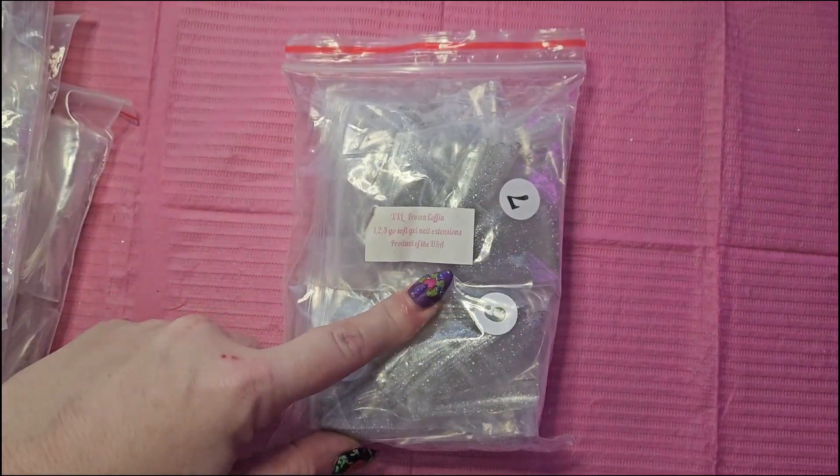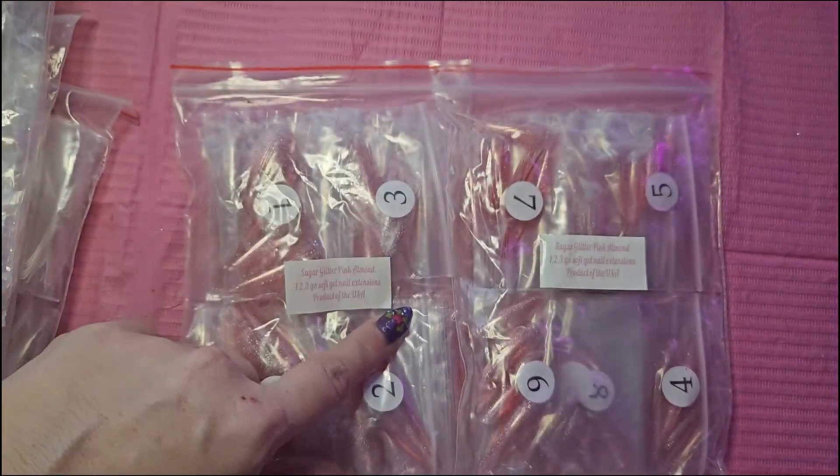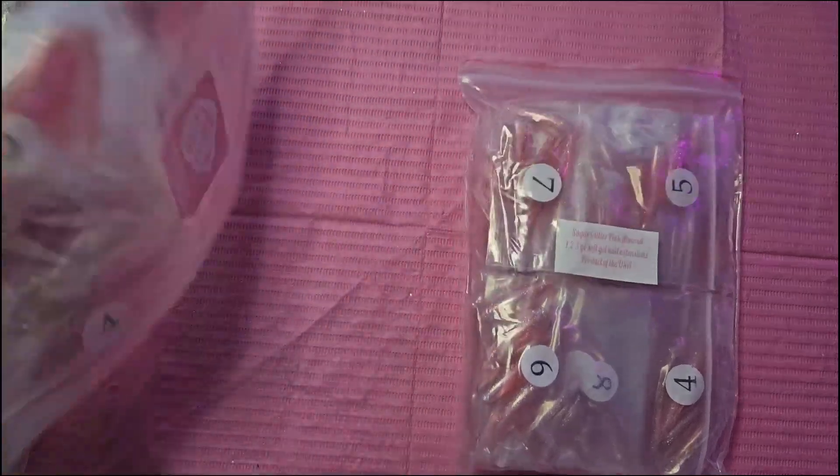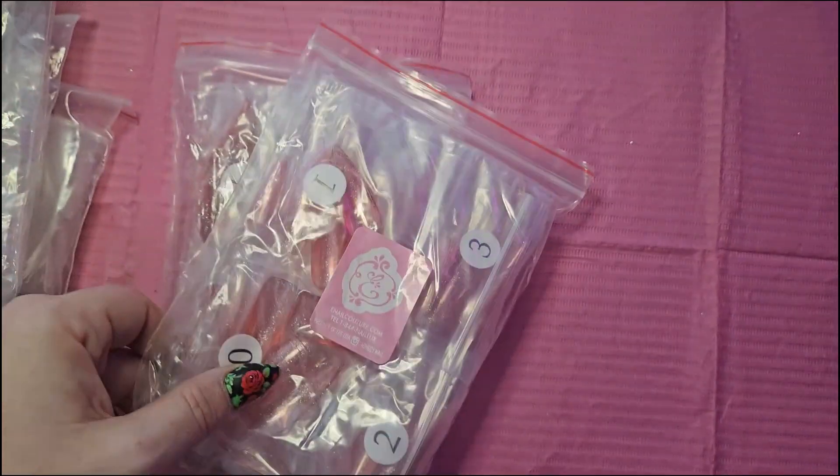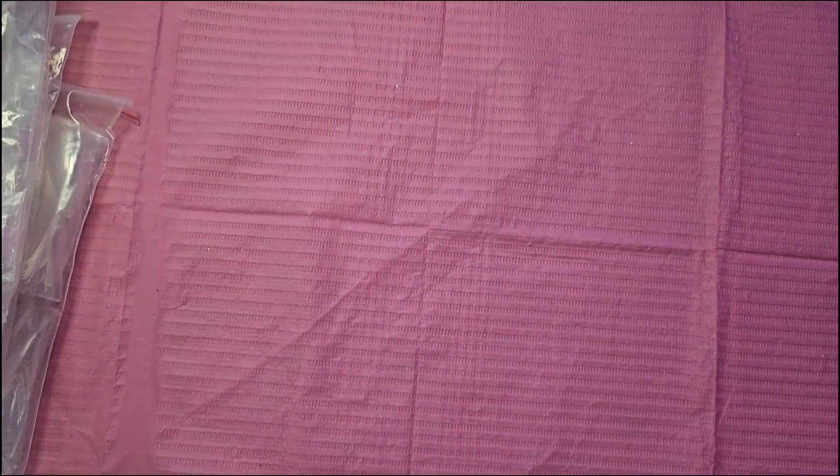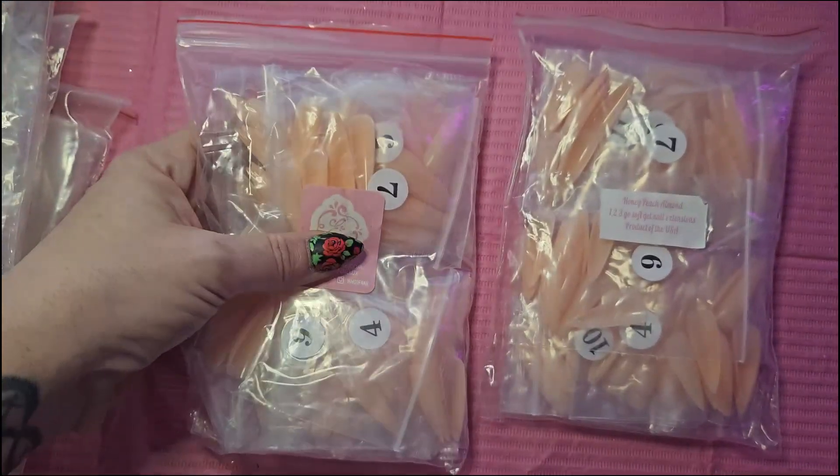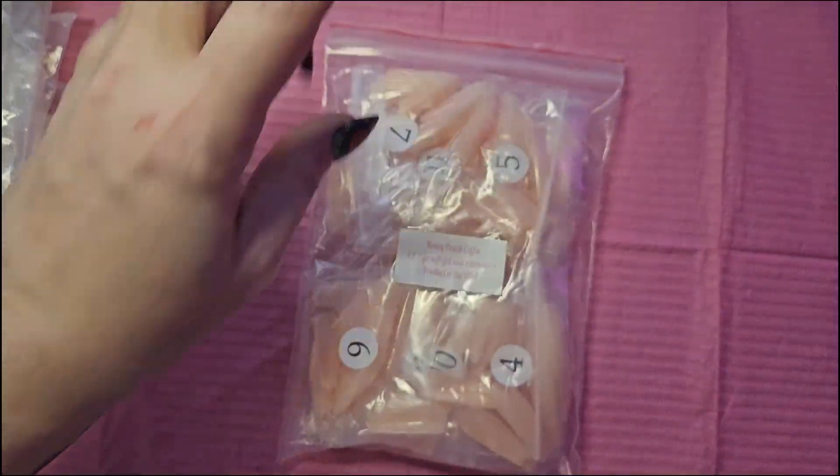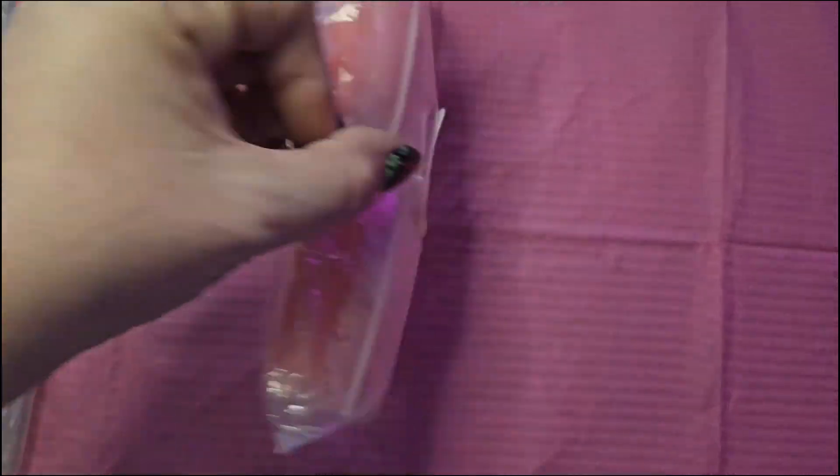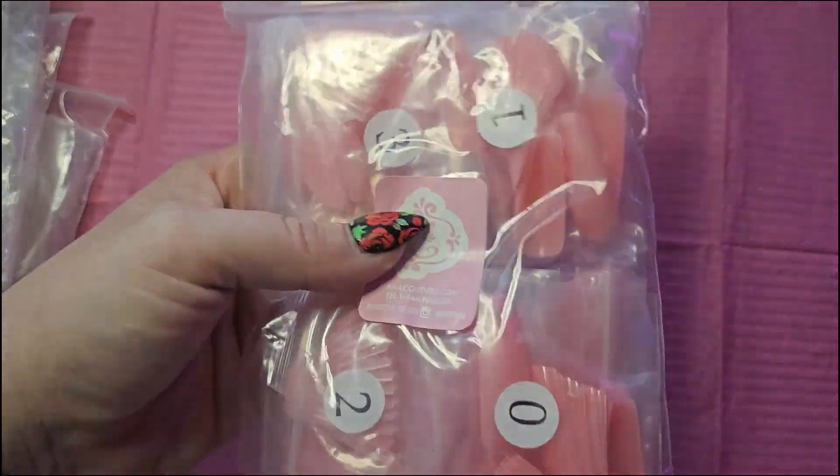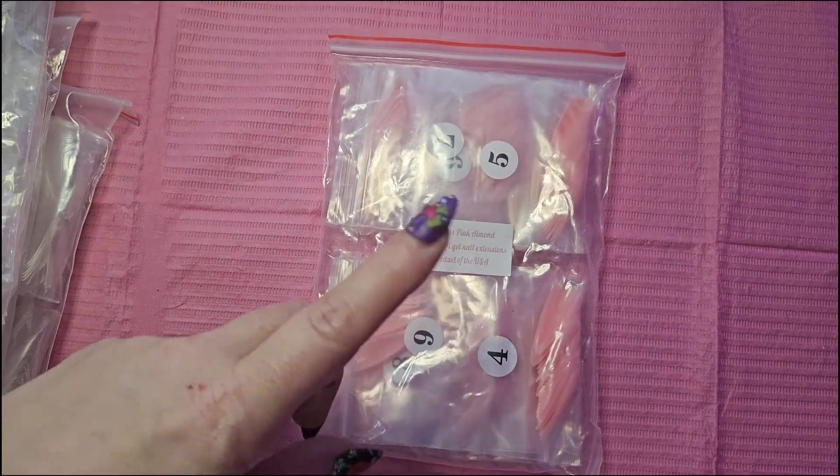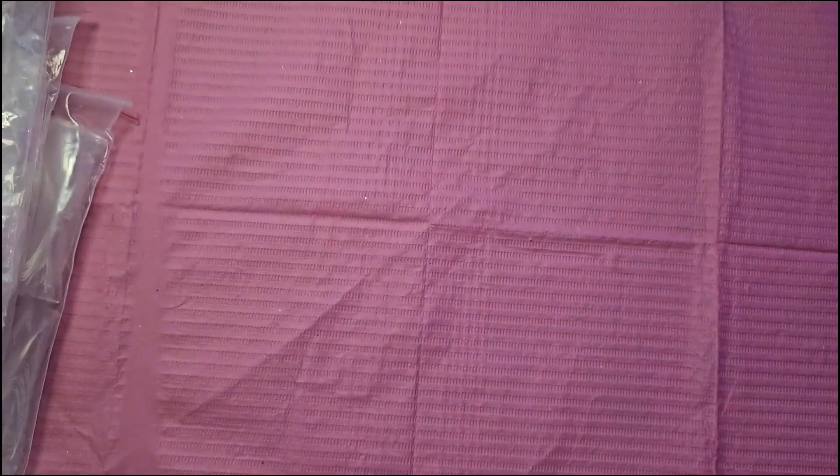I also got quite a few Almond Nails and their Almond Nails are a little bit more stiletto-y shape to me. I was really happy to see so many nails again as a press-on girly. I got two Mini Stilettos, one round, one 24 Coffin, one 24 Carat Almond, one XXL Frozen Coffin. This was another new one: Sugar Glitter Pink Almonds. I got two Honey Peached Almonds, one Honey Peach Coffin, one Princess Pink Coffin, and one Princess Pink Almond. That is all of the 123GO Soft Gel Cover Nails that I received.